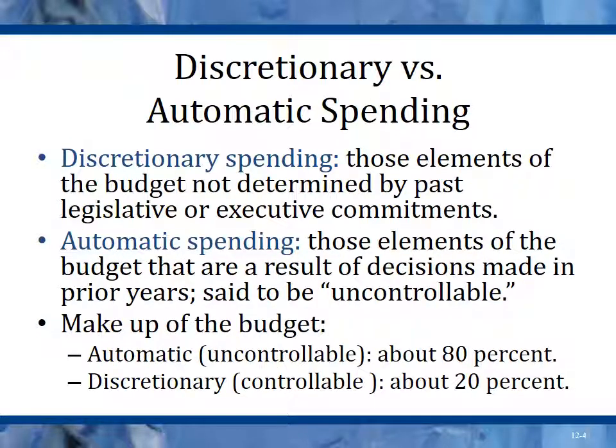There are two types of spending: discretionary spending and automatic spending. Discretionary spending are elements of the budget not determined by legislative or executive commitments — things you can control without having to pass laws. Automatic spending are elements of the budget resulting from commitments made by Congress, typically in prior years, that are uncontrollable. Automatic spending is about 80% of the budget and discretionary is about 20%.